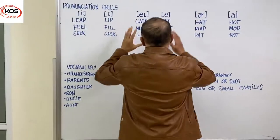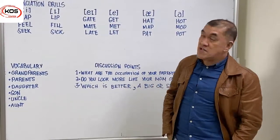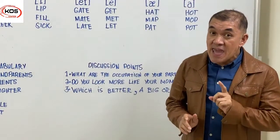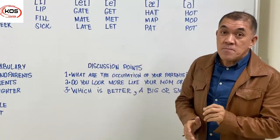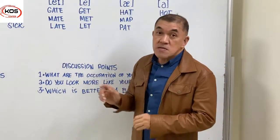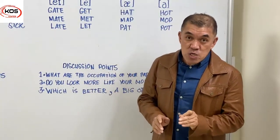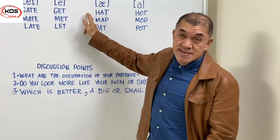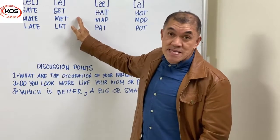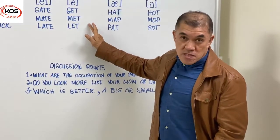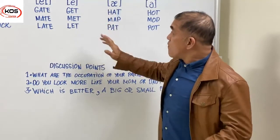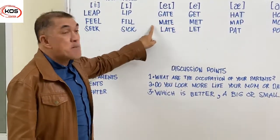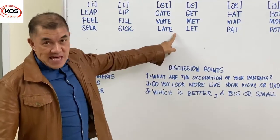We're going to move on to the next set of words. We have the long A sound and the short E sound. Long A words: gate, gate, gate. Mate, mate, mate. Late, late, late. Now the short E words: get, get, get. Met, met, met. Let, let, let. Reading both groups together: gate, get. Mate, met. Late, let.